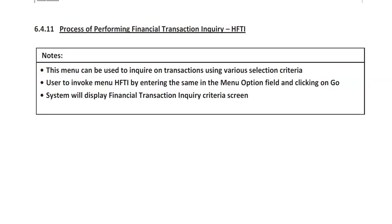HFDI stands for Financial Transaction Inquiry. This menu can be used to inquire on transactions using various selection criteria. To invoke it, enter HFDI in the menu option field and click Go — the system will display the HFDI criteria screen. It has a lot of customization: you can generate reports for particular cash deposits up to 50,000 or 25,000, cash entries, current accounts only, savings accounts only, or user ID wise. It is a very useful tool for officers sitting at the front desk.